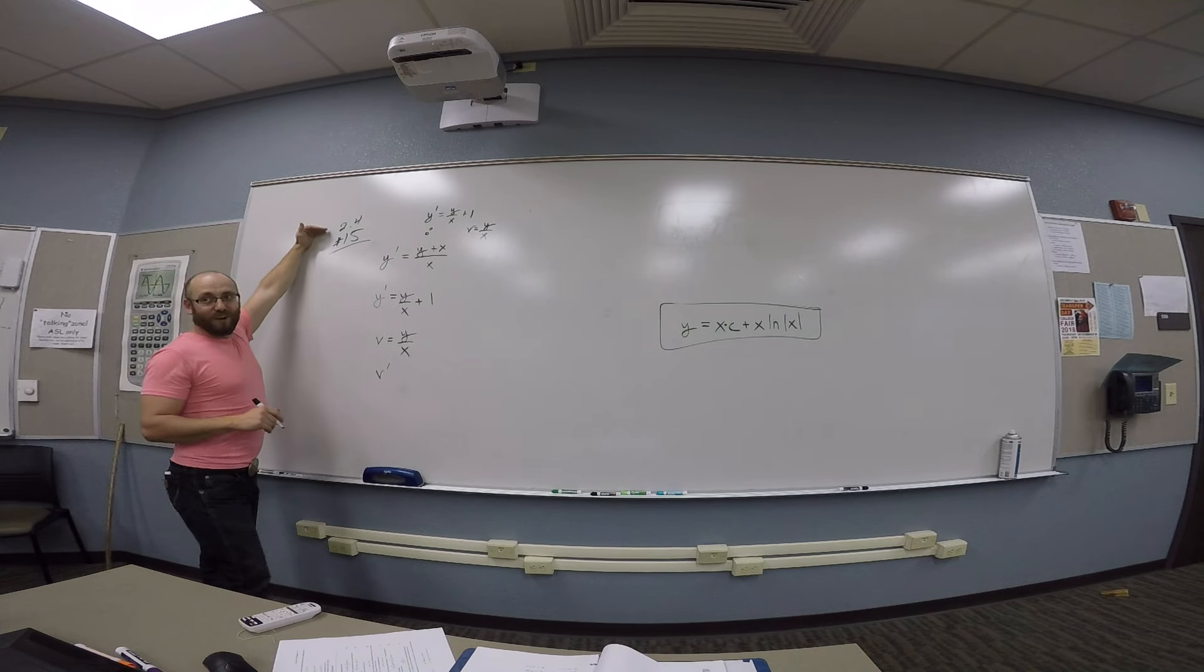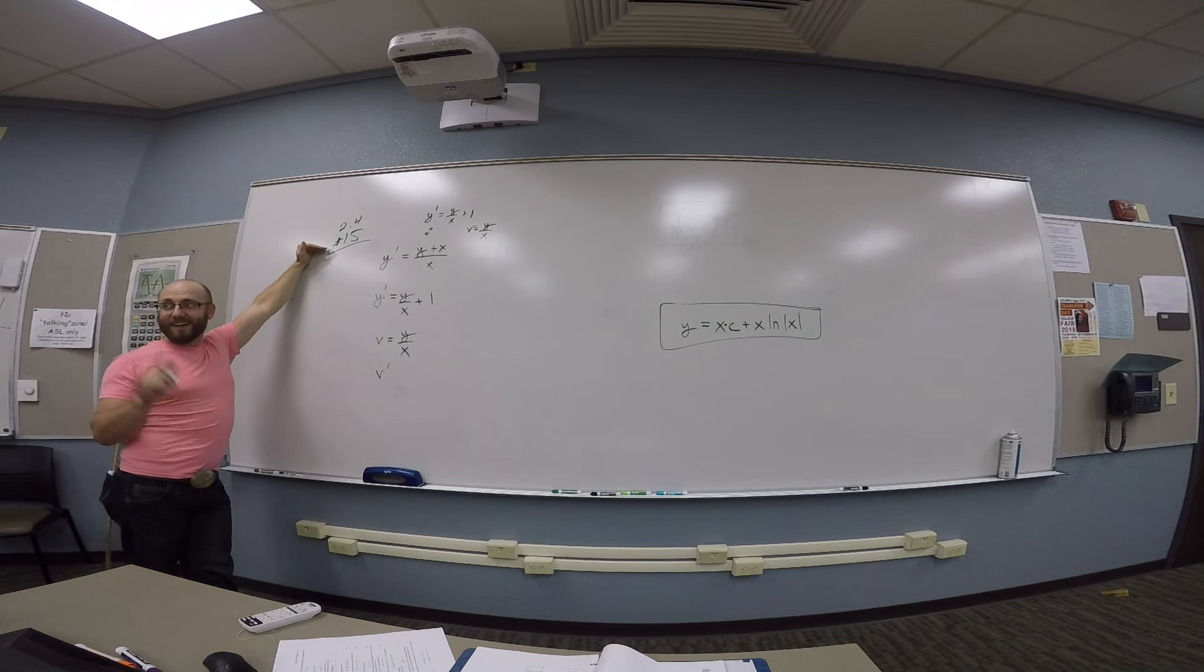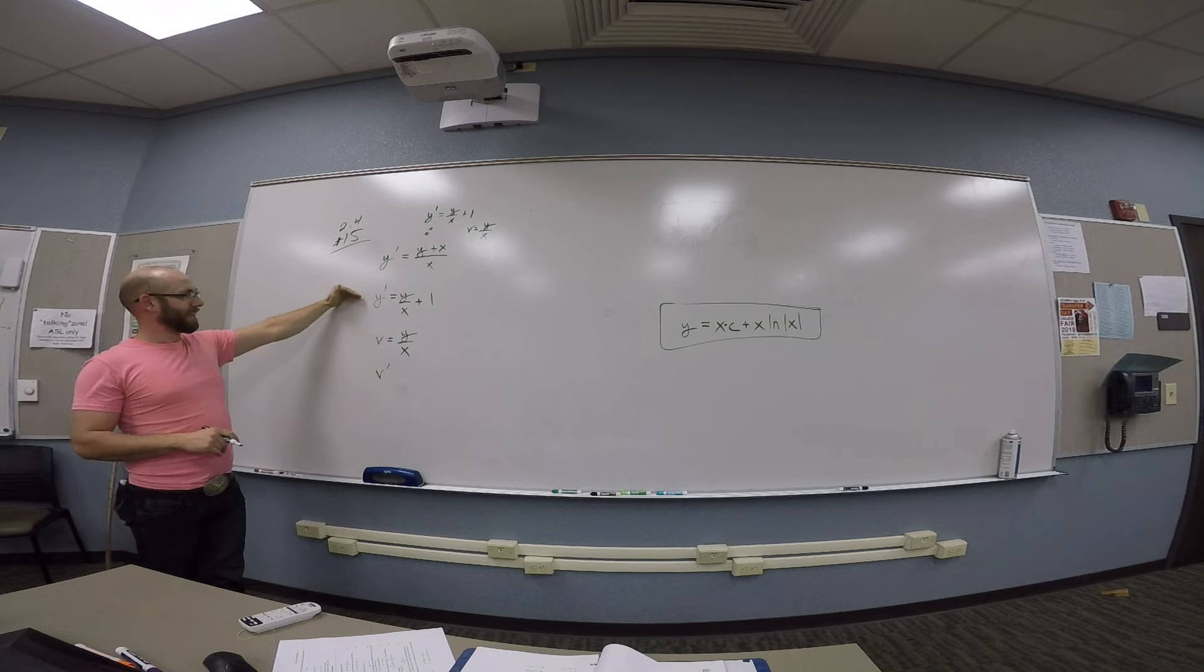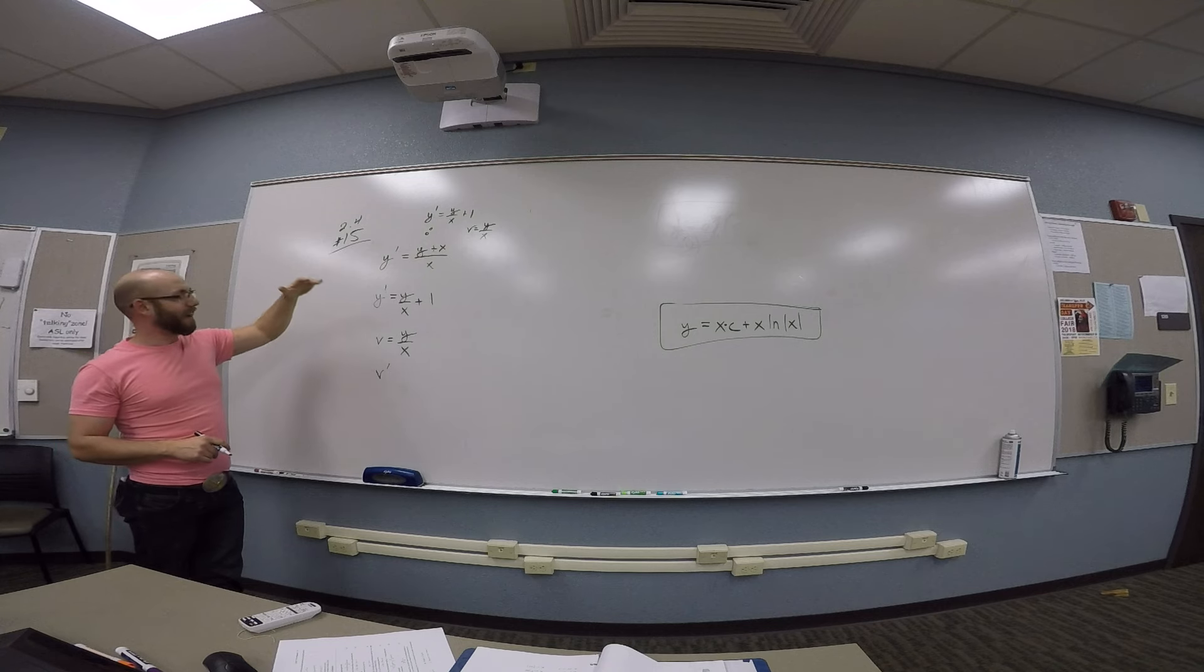So trying 2.4 number 15 the other way. I have rewritten as y prime is y over x plus 1, and then I'm going to make the substitution v is y over x.